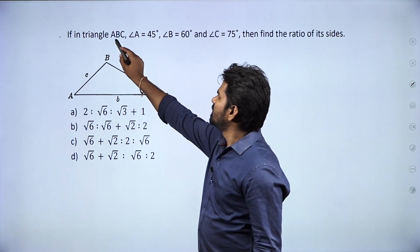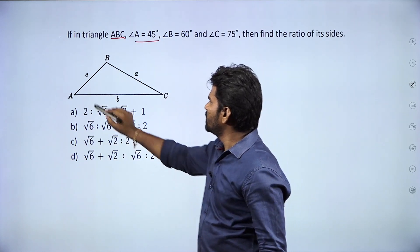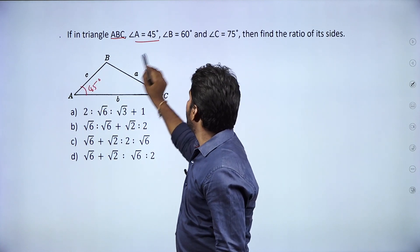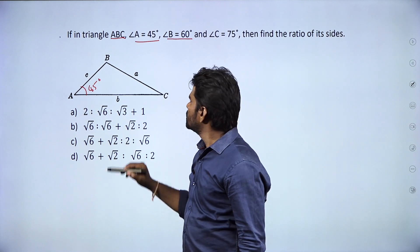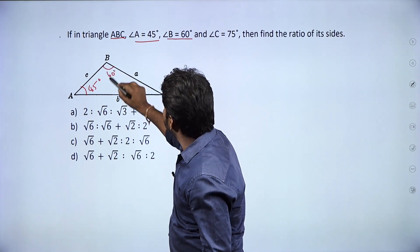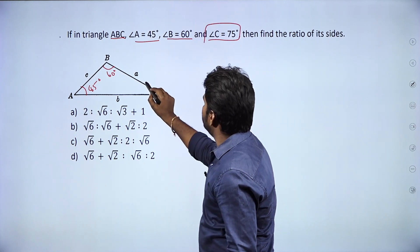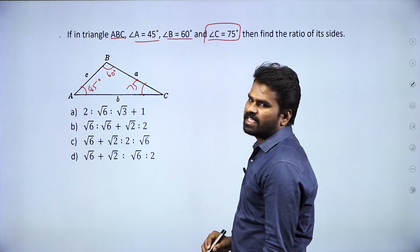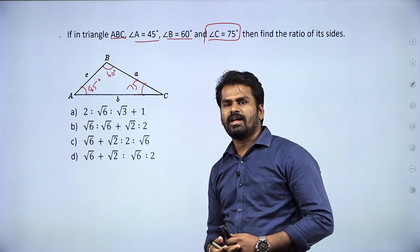In triangle ABC, angle A is equal to 45 degrees, angle B is equal to 60 degrees, and angle C is equal to 75 degrees. Find the ratio of its sides.